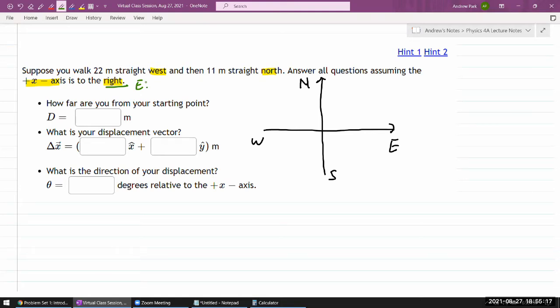So it says suppose you walk 22 meters straight west. Okay, so I'm just going to label this as x1. So 22 meters straight to the west, I'm going to walk the distance of x1 to the west. And then it says 11 meters, I'm going to call this y1, straight north.